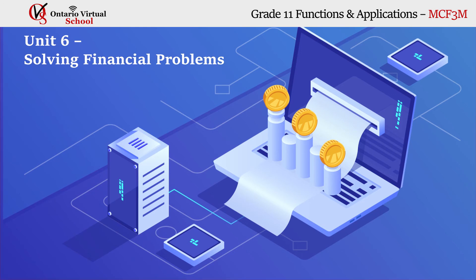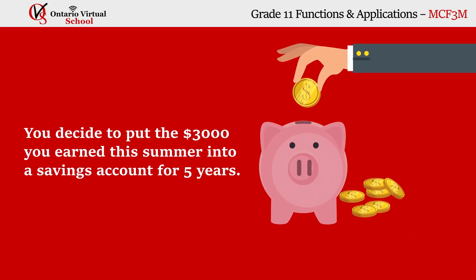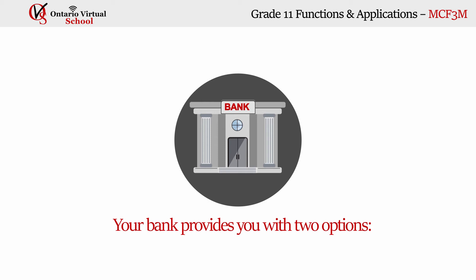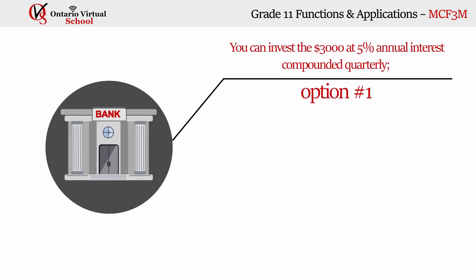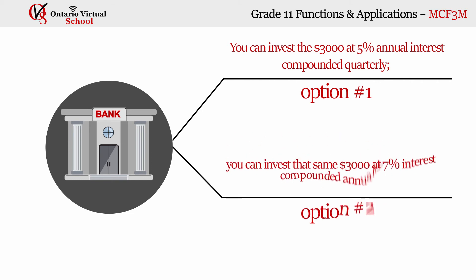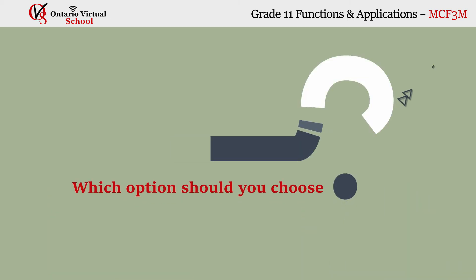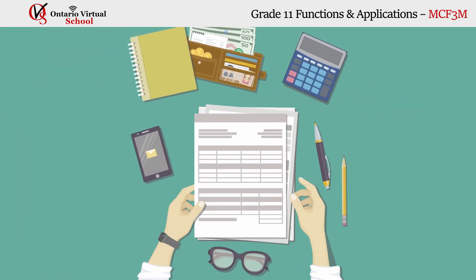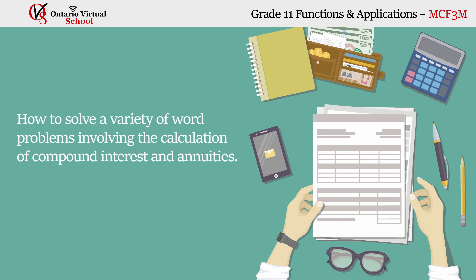Unit 6: Solving Financial Problems. You decide to put the $3,000 you earn this summer into a savings account for five years. Your bank provides two options: with option one, you invest $3,000 at 5% annual interest compounded quarterly; with option two, you invest the same $3,000 at 7% interest compounded annually. Which option should you choose? In this unit we will look at real-world finance questions like this and learn how to solve a variety of word problems involving compound interest and annuities.